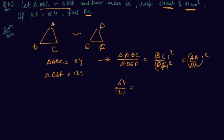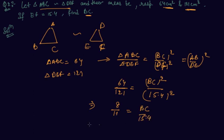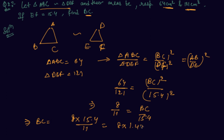So we have 64 upon 121 equals BC squared upon 15.4 squared. Taking the square root on both sides gives us 8 by 11 equals BC by 15.4. So BC equals 8 times 15.4 upon 11, which simplifies to 1.4 times 8 equals 11.2. So our side BC comes out to be 11.2 centimeters, which is what we had to find out.